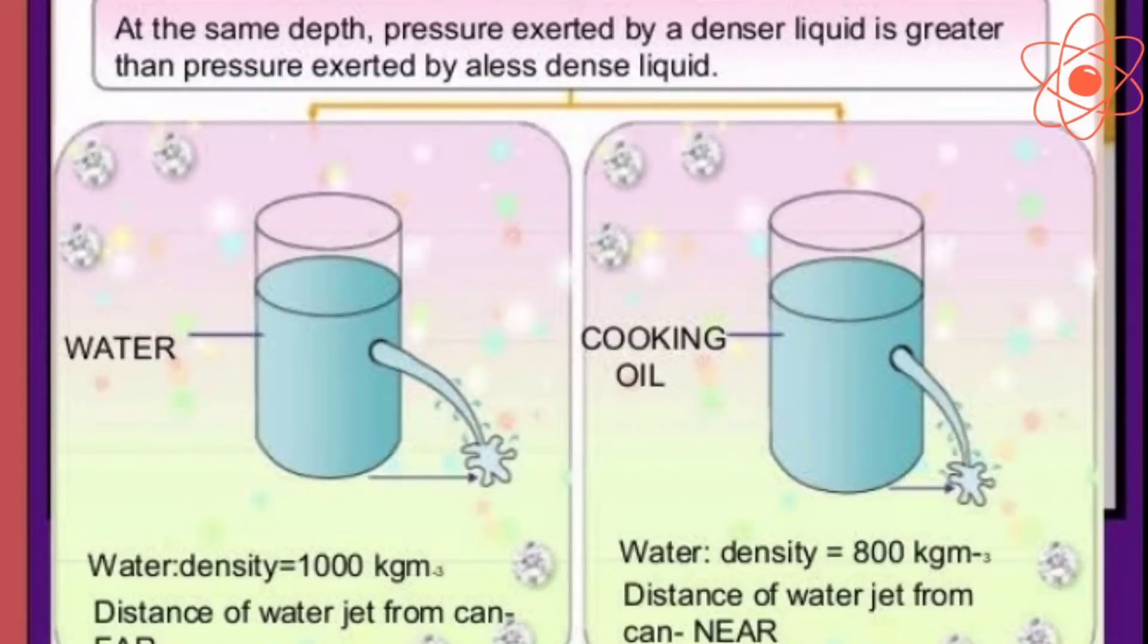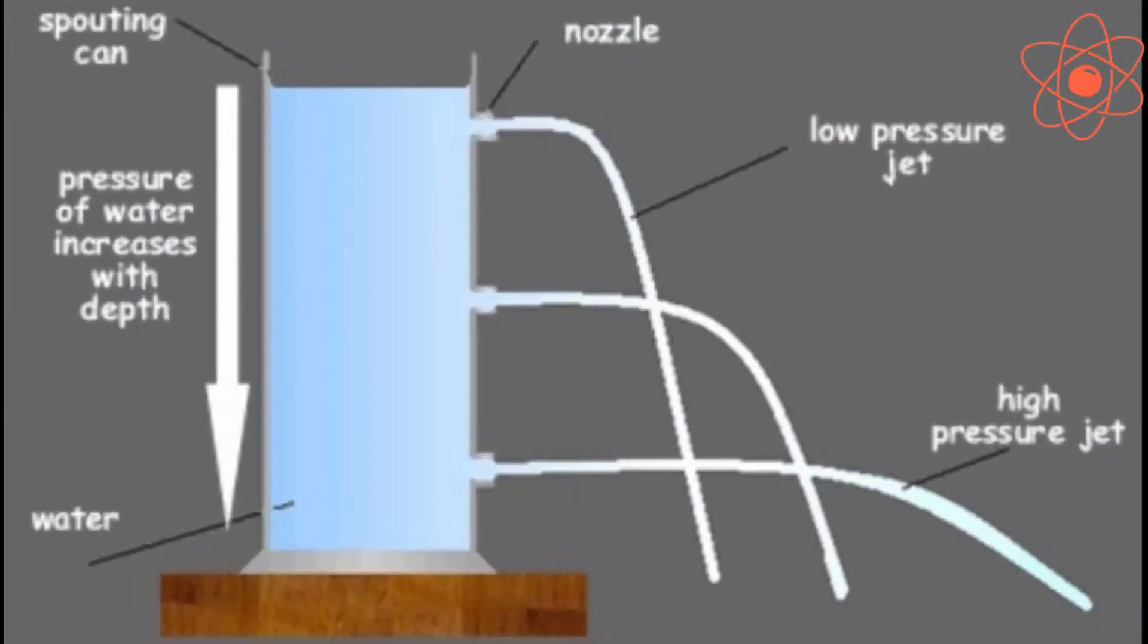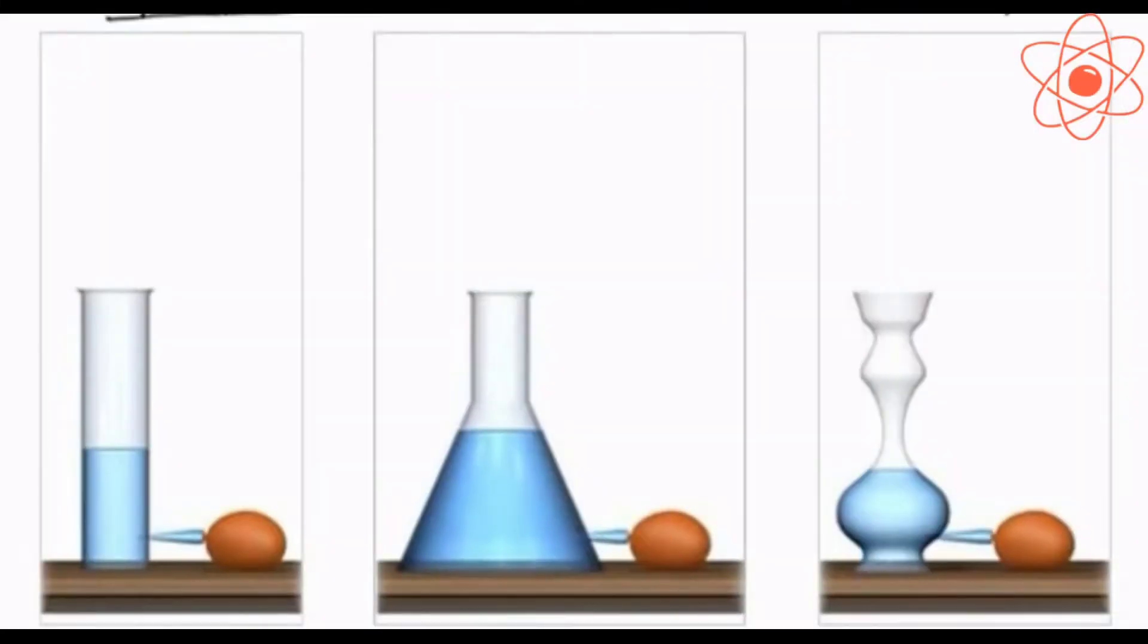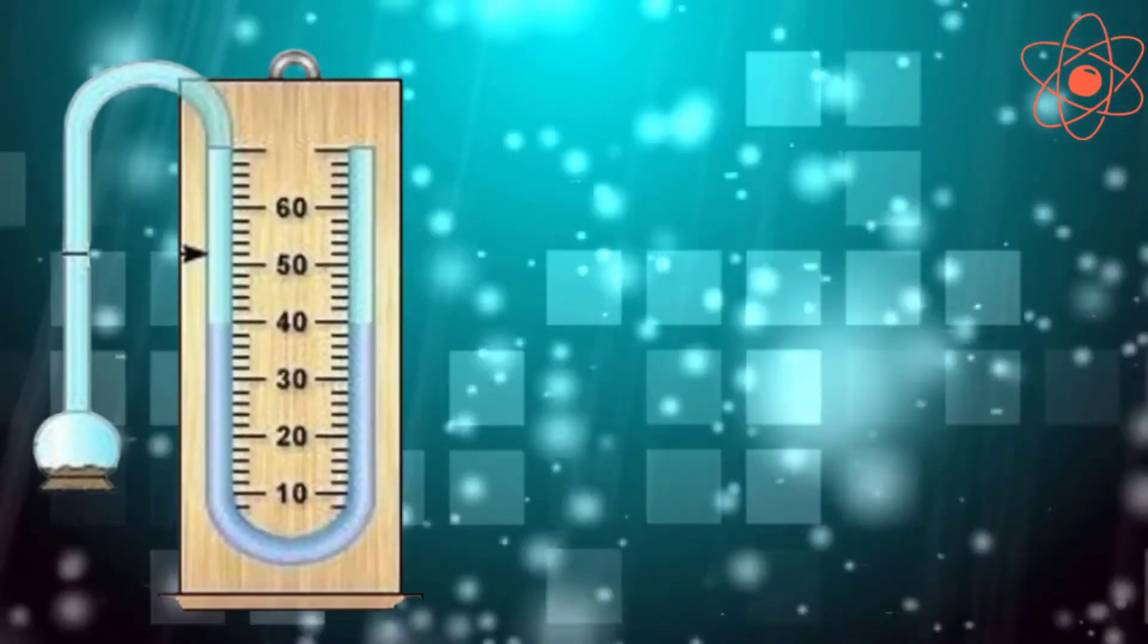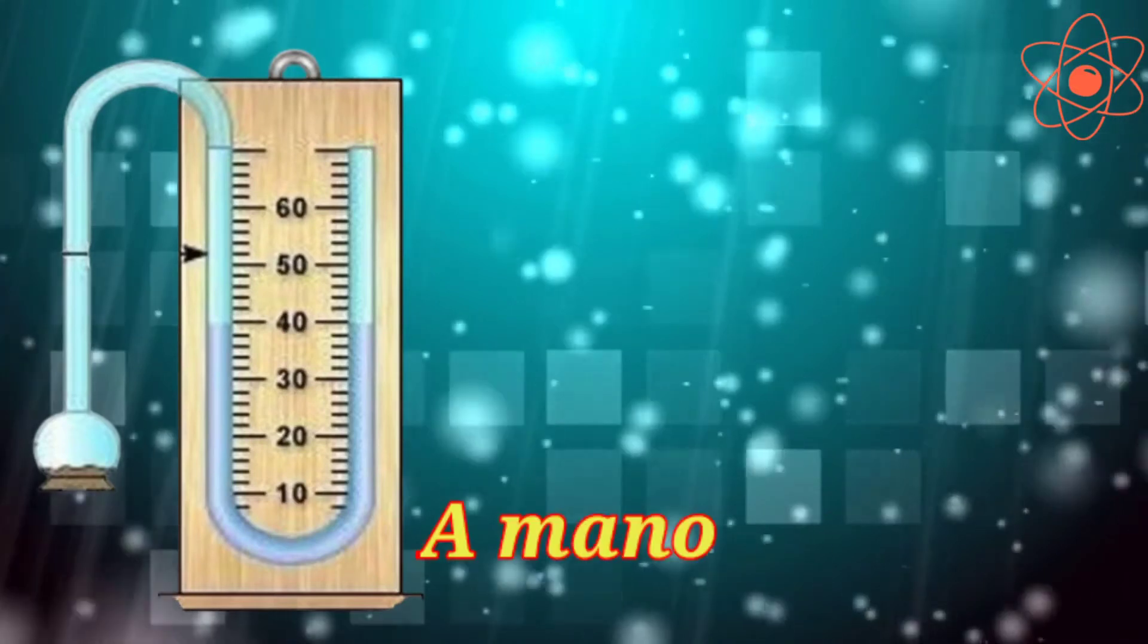Liquid pressure depends on various factors like density of liquid and depth of liquid. It does not depend on the shape or size of the container. Liquid pressure can be studied by using a manometer, a simple device used to measure liquid pressure.